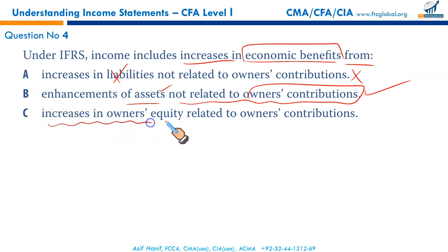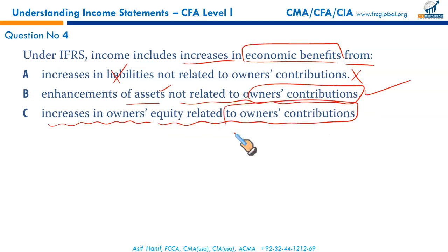Increases in owner's equity related to owner's contribution — when owners purchase more shares, the money from the share issue or injection by a sole proprietor or partner used to acquire assets is not income. It is the owner's contribution towards increasing equity. So the correct option is B.